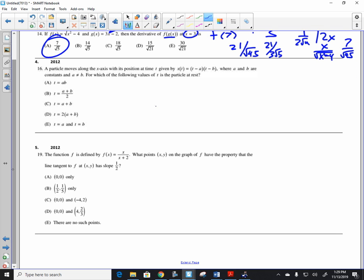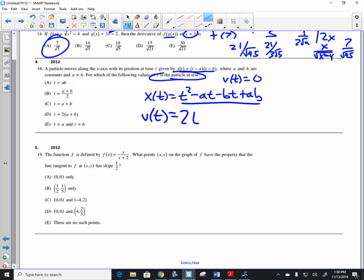Number 4, I guarantee you're going to have at least a couple problems like this on the test. We talk about motion and position. This is the position and it says for which of the following is the particle at rest. That's when v of t is equal to 0. So x of t is, if I multiply it out, t squared minus at minus bt plus ab. So therefore v of t is, I have to take the derivative of that, which is 2t minus a minus b. When is that equal to 0? When is 0 equal to 2t minus a minus b? Add the a and b over to the other side and divide by 2. And we get a plus b divided by 2. Letter b is your result.